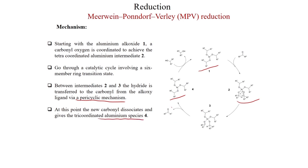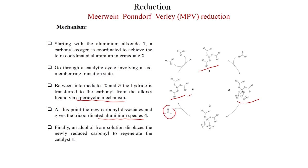Between intermediates 2 and 3, the hydride is transferred to the carbonyl from the alkoxide ligand via a pericyclic mechanism. At this point the new carbonyl dissociates to give the hexa-coordinated aluminum species 4. The ketone is eliminated, and the alkoxide is forming. Alcohol solvent, present in large quantity, displaces the newly reduced carbonyl to regenerate catalyst 1.